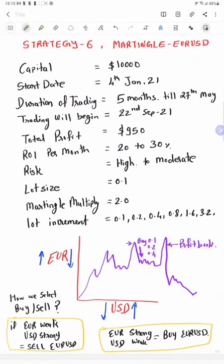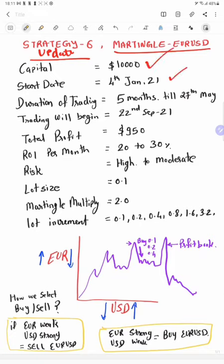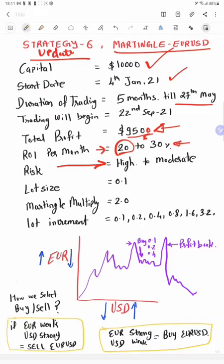Now we go to part three where we study the parameters — why we do the buy and sell. At the end of the video we will analyze the risk and reward, so stay tuned to learn things you can implement in your live trading. In this updated Strategy 6 we are closing the old strategy and updating to the martingale EUR/USD with a ten thousand dollar capital account. The account started 4th June, verified five months old till 27th May, with total profit of 9,500. Dividing by five gives around 20 to 30 percent monthly ROI. Risk is high to moderate — if you use all the parameters, risk will be moderate to low; if you trade blindly, risk is very high.